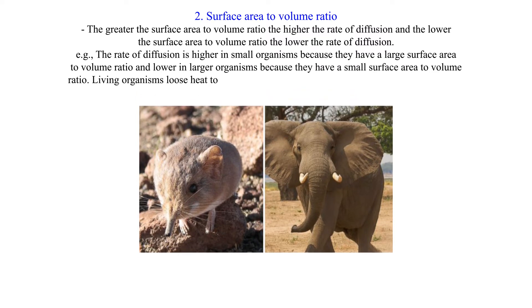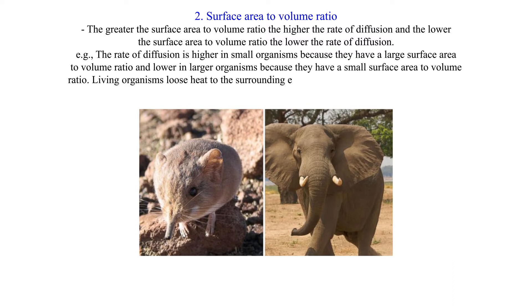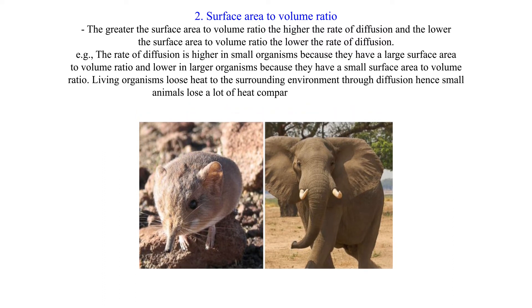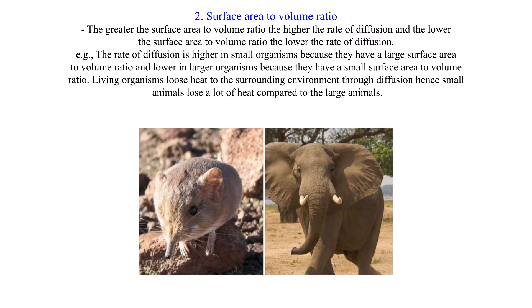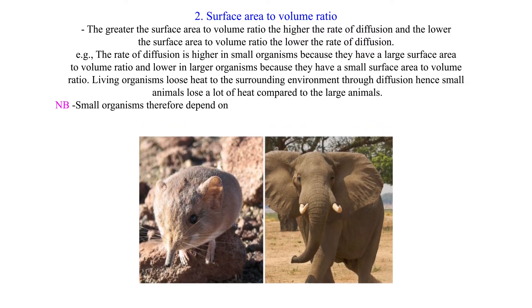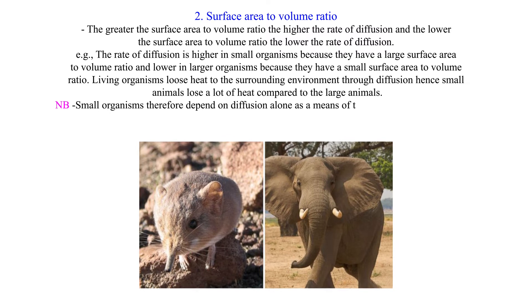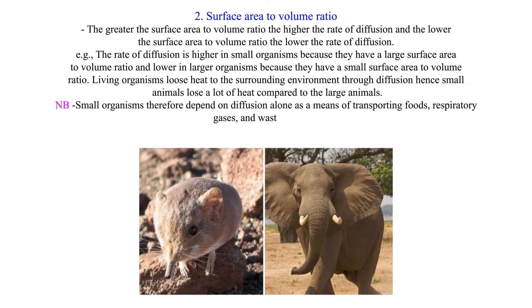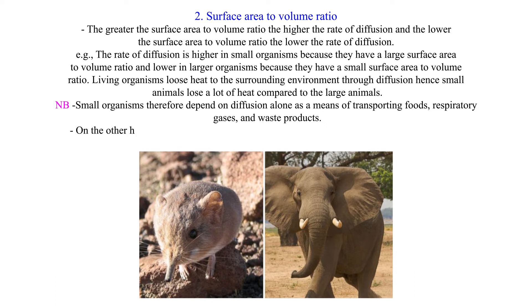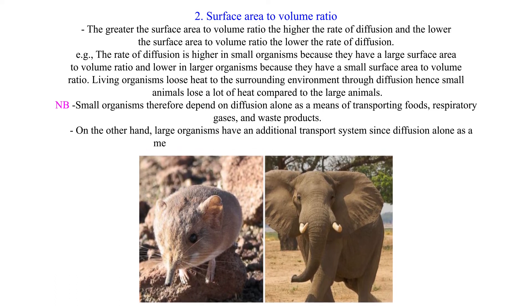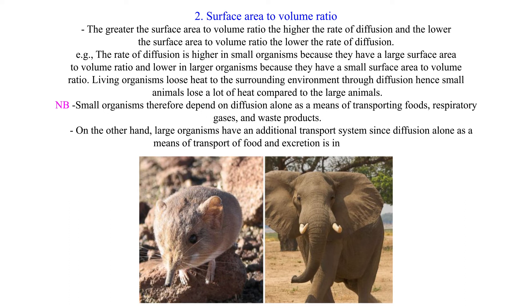Living organisms lose heat to the surrounding environment through diffusion, hence small animals lose a lot of heat compared to large animals. Small organisms therefore depend on diffusion alone as a means of transporting food, respiratory gases, and waste products. On the other hand, large organisms have an additional transport system since diffusion alone as a means of transport of food and excretion is inadequate.